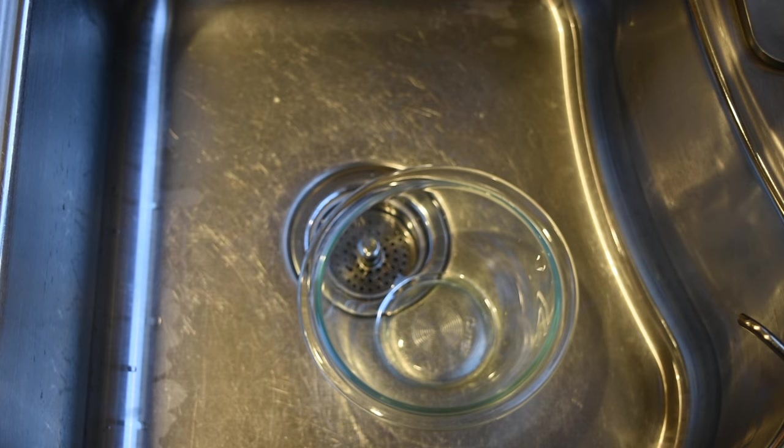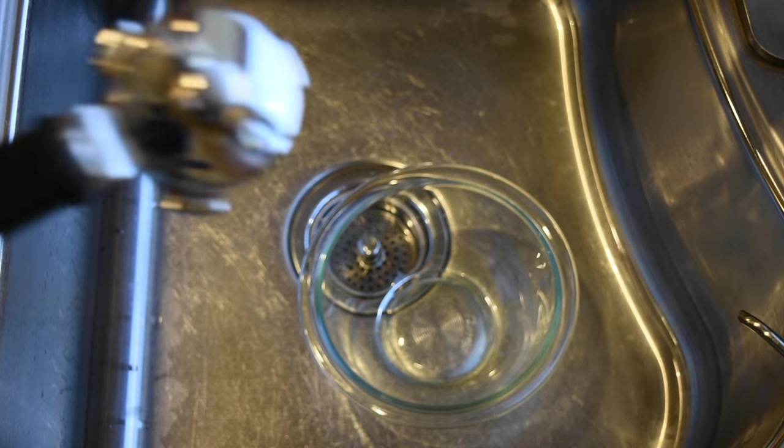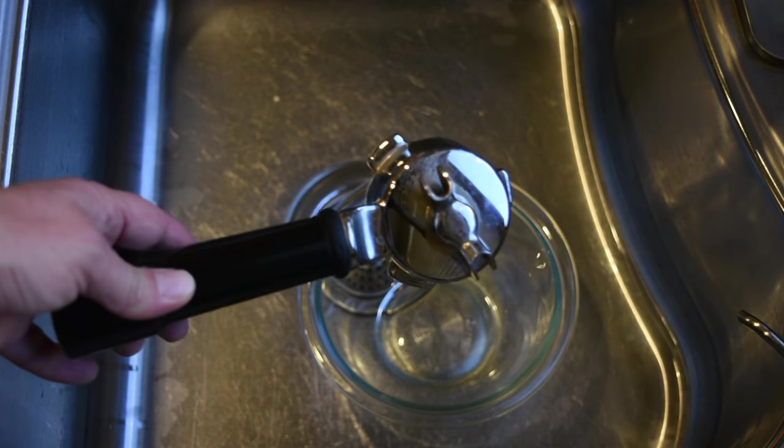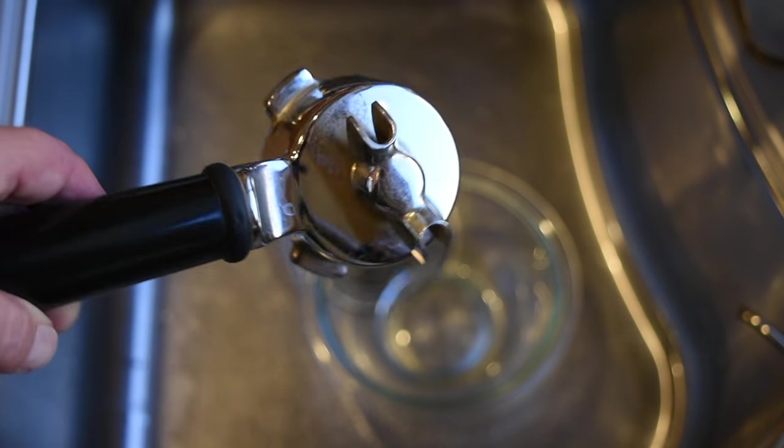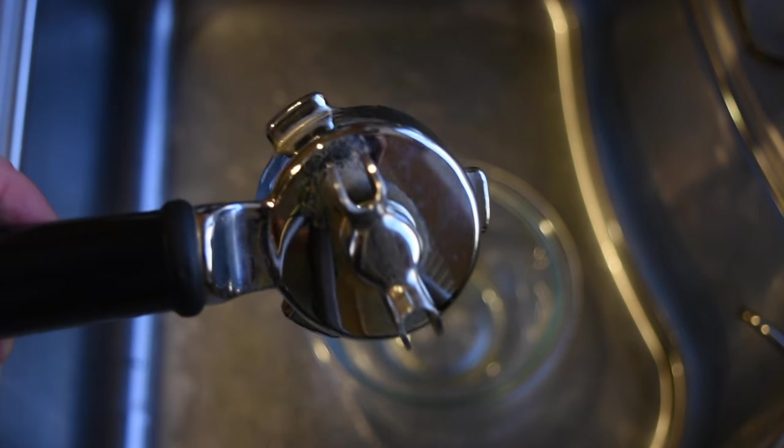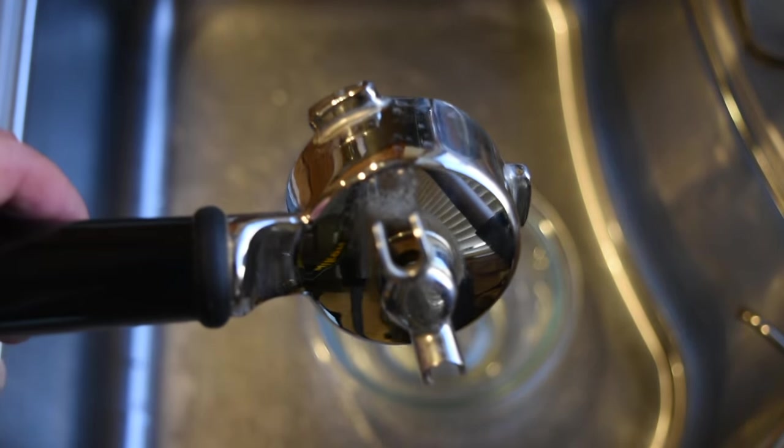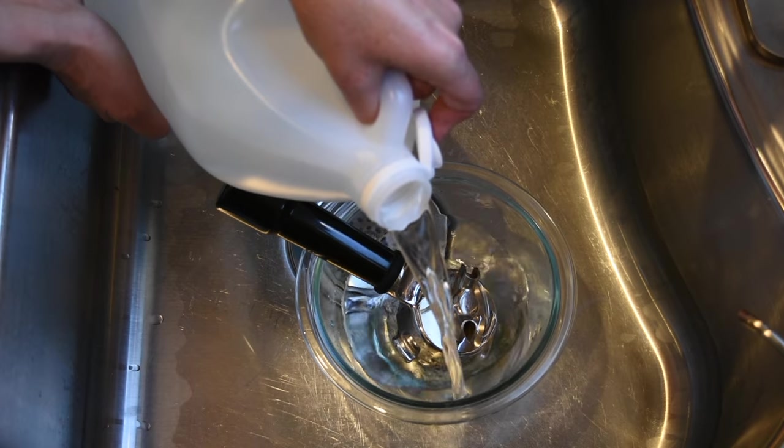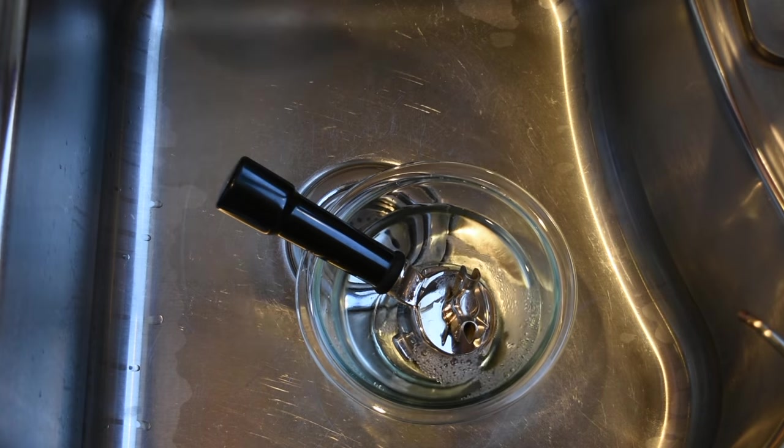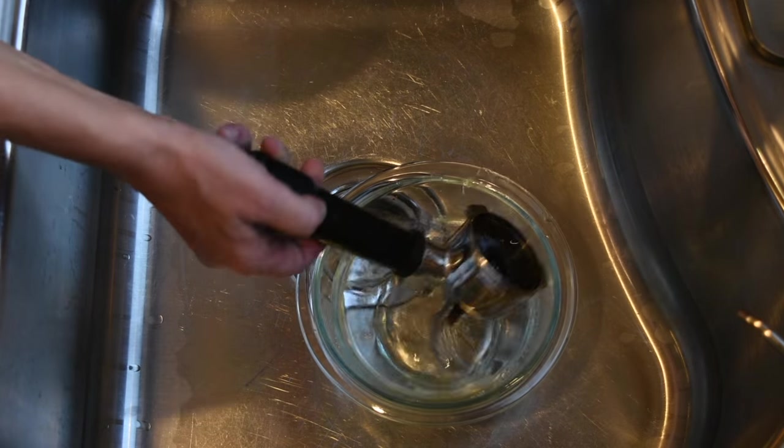Another thing I always clean with vinegar is the filter in my espresso machine, and you can see from the hard water how it creates these spots right where the coffee comes out, and that is impossible to wash with a sponge and dishwasher soap. So what I'm gonna do is in the same bowl I'm gonna put the filter and I'm gonna fill it up with vinegar and let it sit on each side for about 15 minutes.